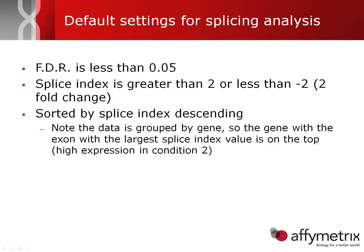Within the TAC software, the additional default settings for splice variant analysis are: FDR set to less than 0.05; the splice index threshold set to greater than two or less than minus two, so you're always looking for splicing events with at least a two-fold change; and results sorted by splice index in descending value. Data is grouped by gene, so the gene with the largest splice index event appears first, followed by other splice events within that gene, then the next gene. This will be clarified further in the TAC demo available on affymetrix.com.